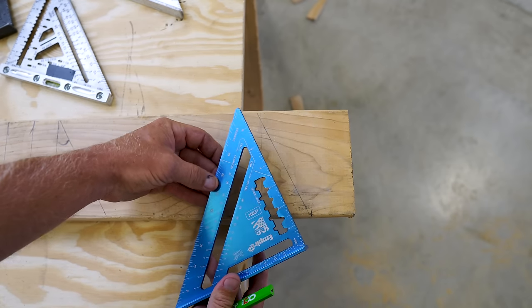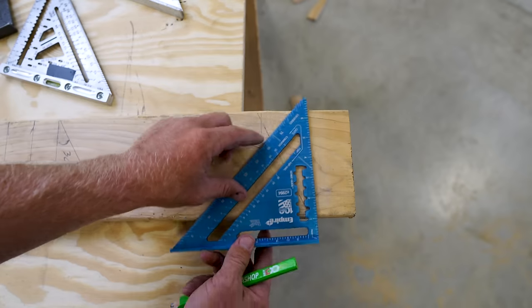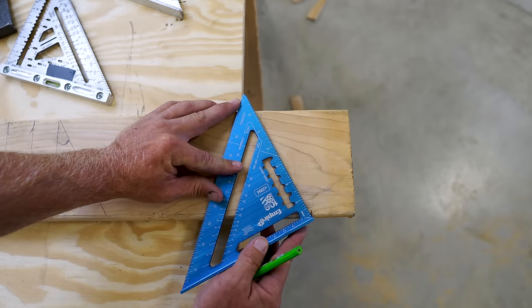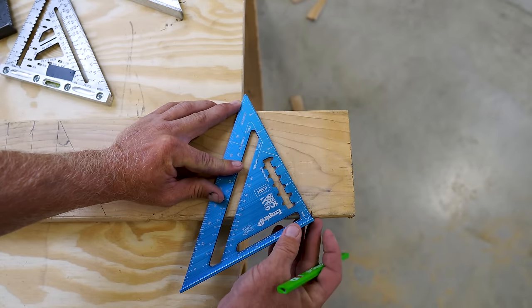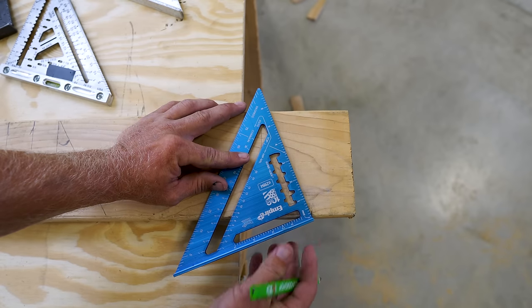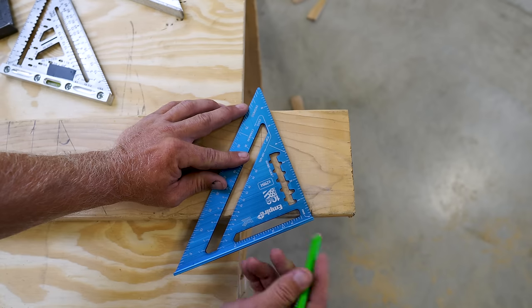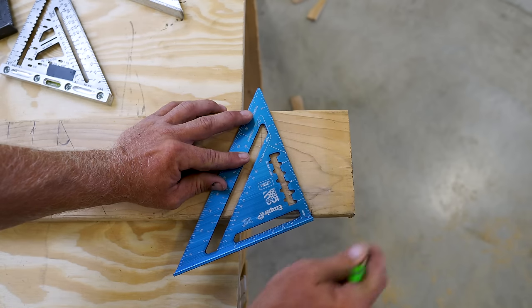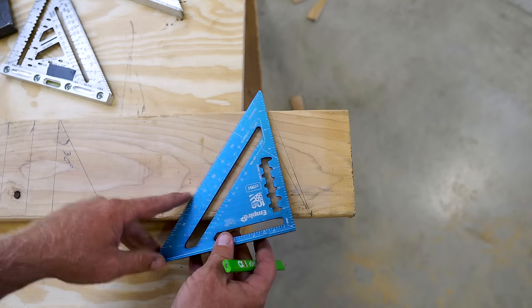If you're doing valleys or hips, it gets a little more complicated. You're going to use this line in here. You'll notice that if I'm making a 6/12 common rafter cut, I'm going out here. But whenever you get into a hip and valley, because of trigonometry or mathematics, the angle is reduced and you're going to use this 6/12 measurement for any hip and valley.